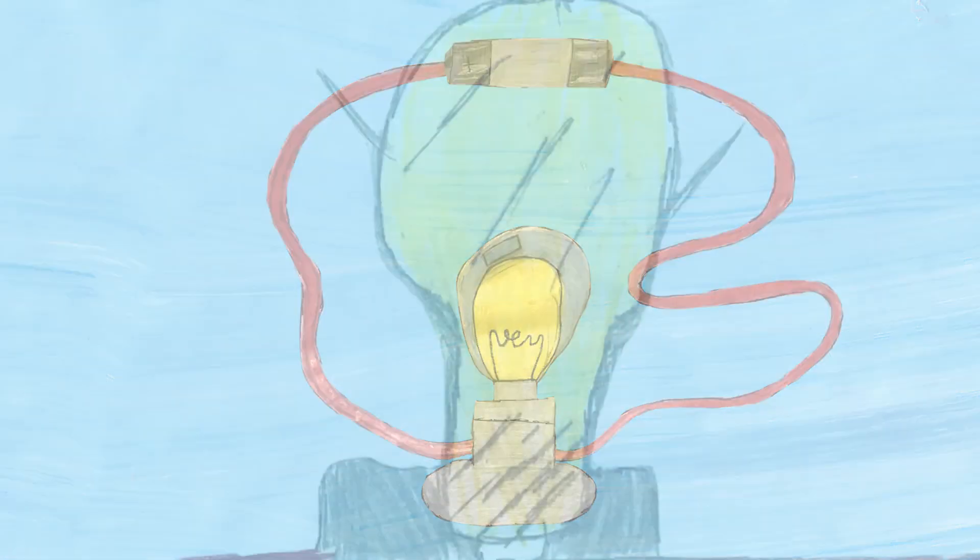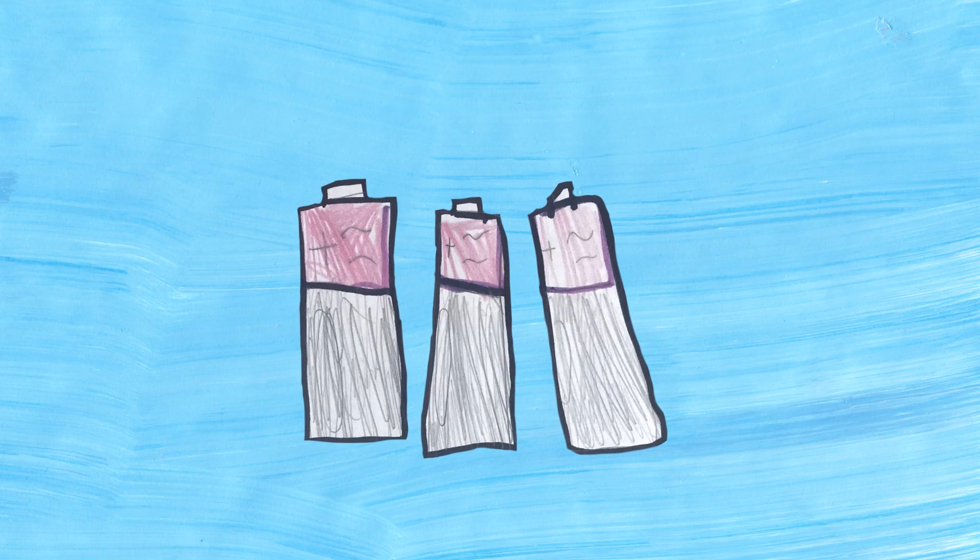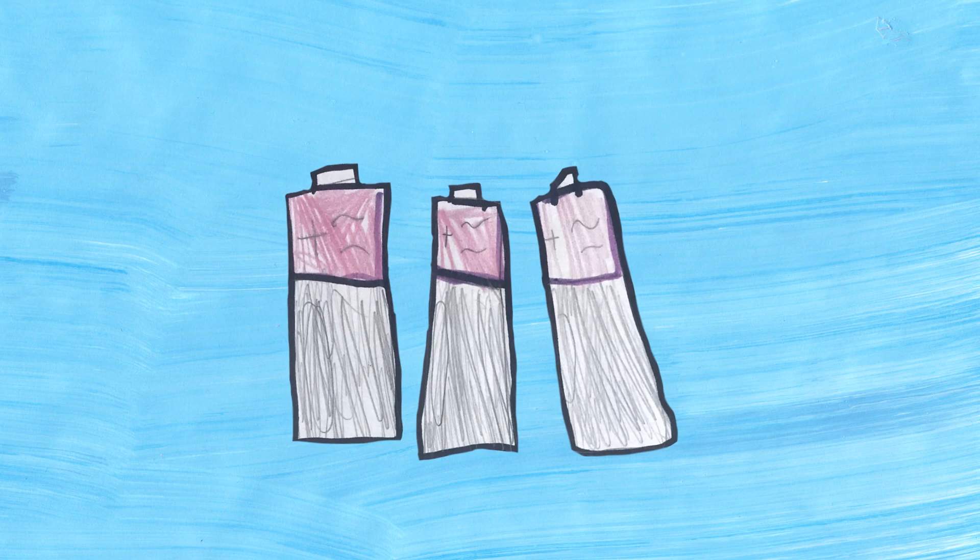When the electricity moves around a circuit, it is called an electric current. In order to make a component in a circuit work, it needs a source of energy.